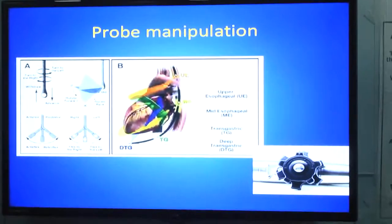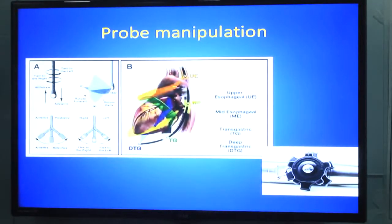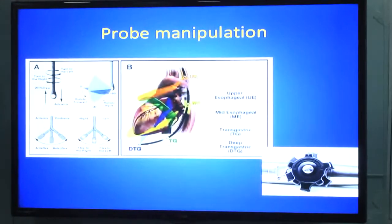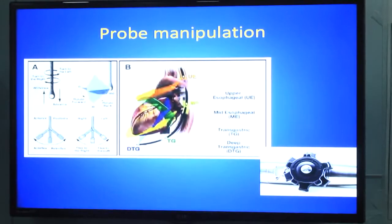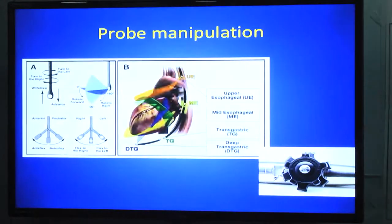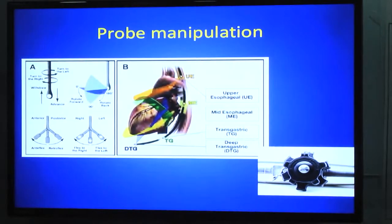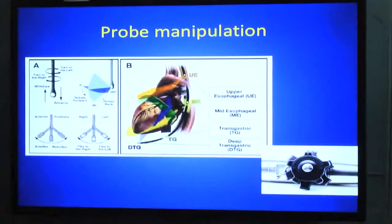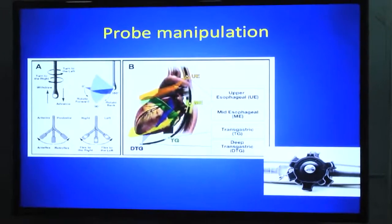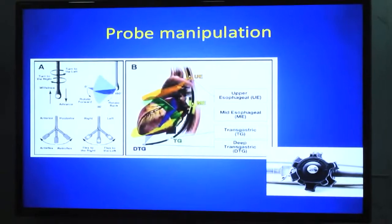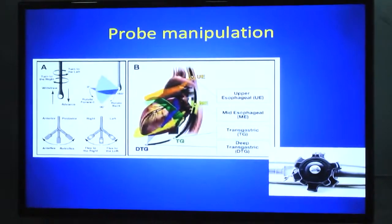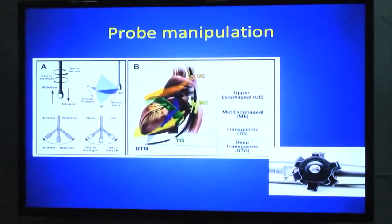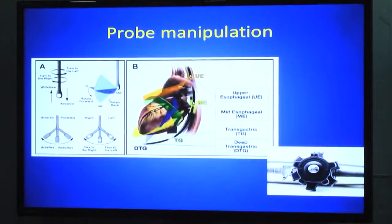Before going to actual practice, we should know about some of the probe manipulations we are going to do to obtain these images. The first manipulation is to introduce the probe into the esophagus to a certain depth or into the stomach — we call this advancing the probe. Moving it in the opposite direction we call withdrawing the probe.